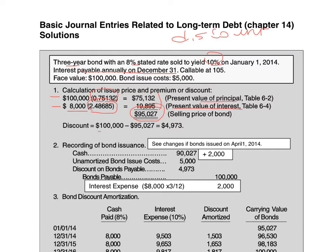The amount of discount will be the difference between the face value of the principal and the selling price. You're ready to journalize the bond issuance. The first item is to credit bonds payable for $100,000. Then record the discount — discount has a normal debit balance for $4,973. We also have unamortized bond issue cost, which is not an asset but a deferred charge, with a normal debit balance for $5,000. Cash received in this case will be only $90,027 as opposed to $95,000, the selling price of the bond, simply because we have the bond issue cost to account for.